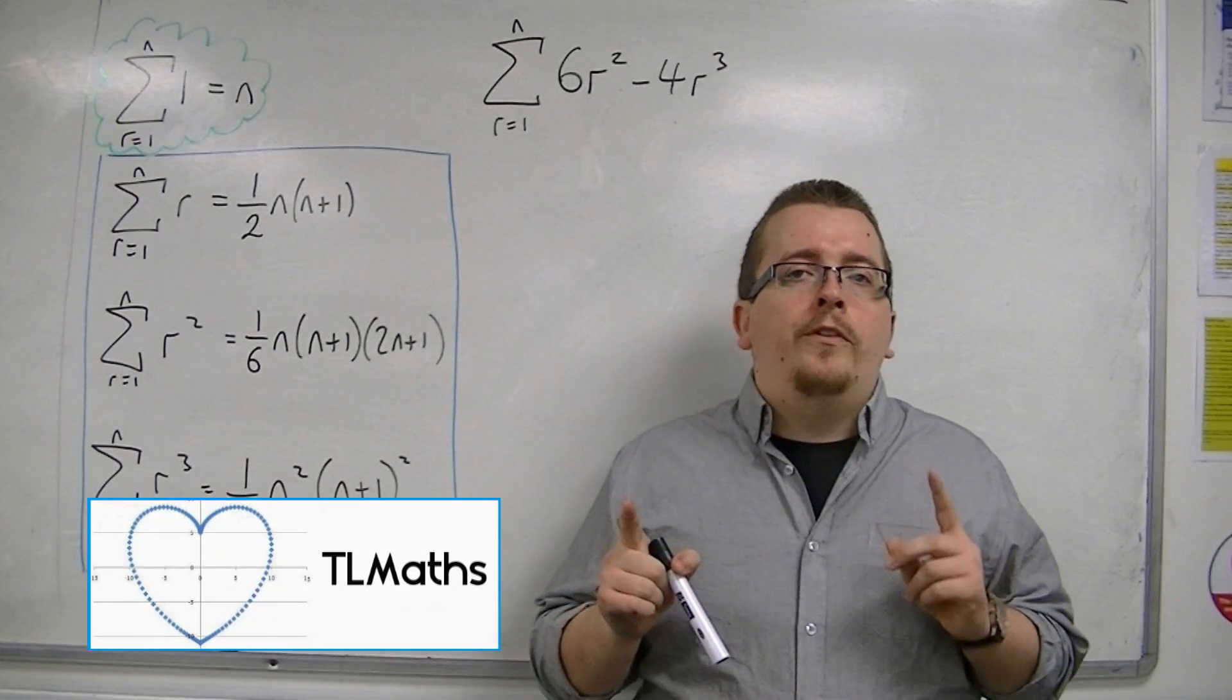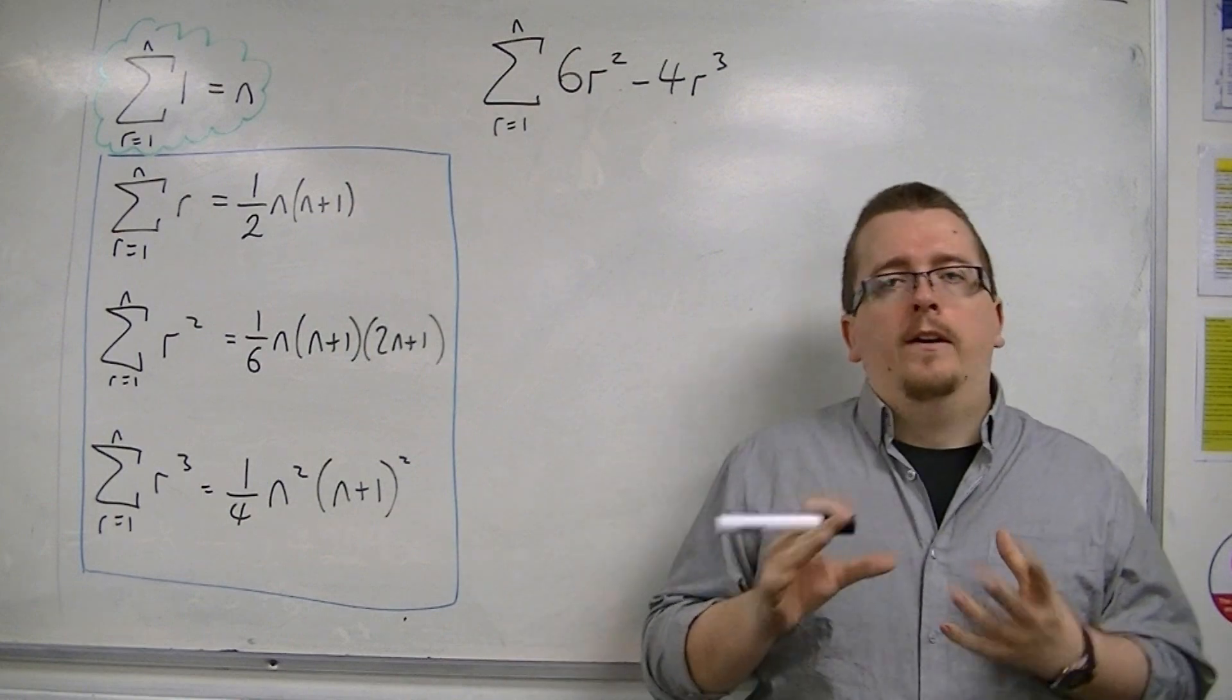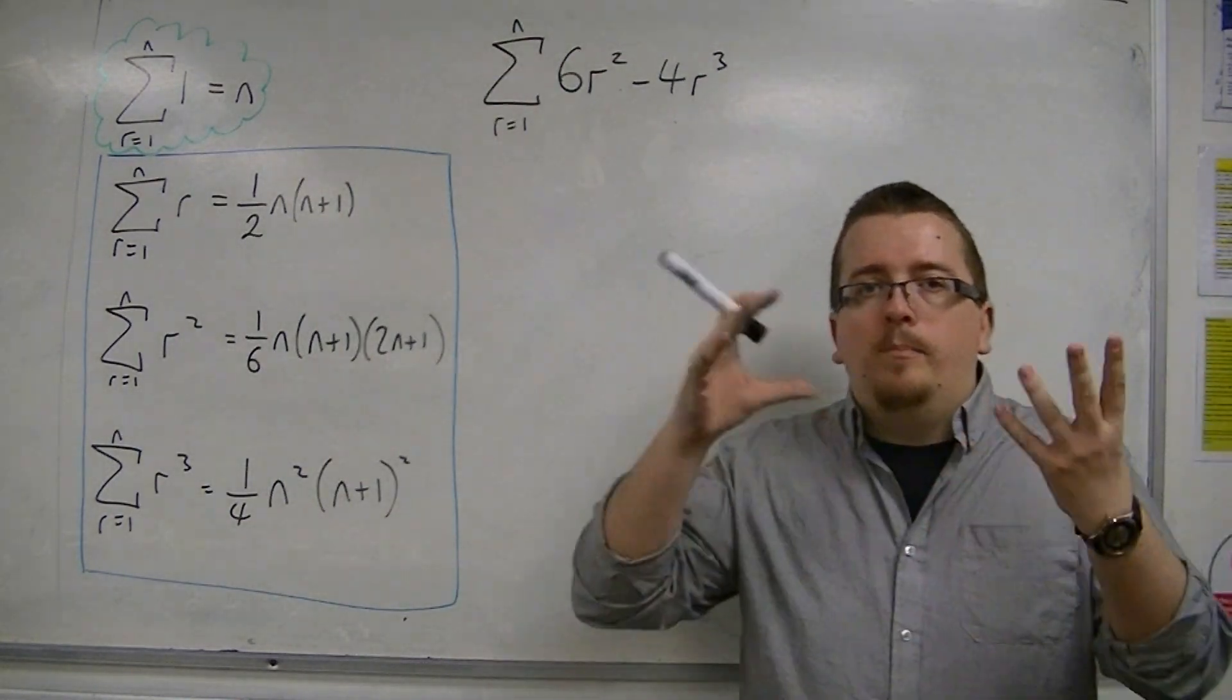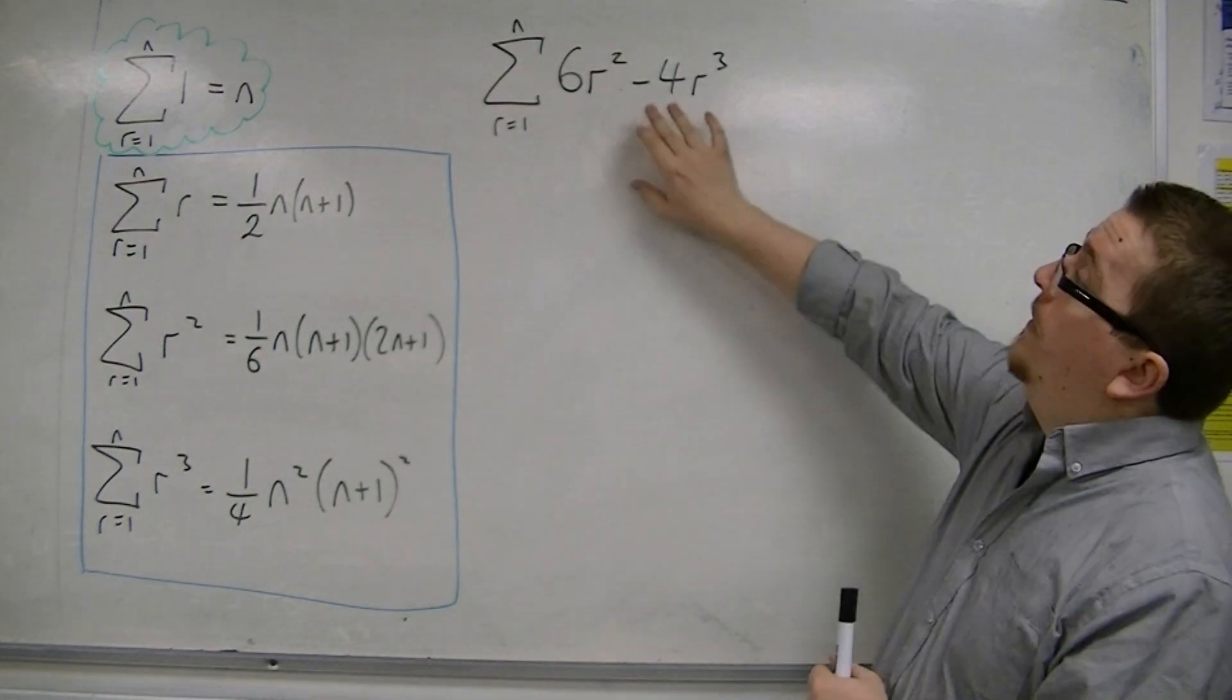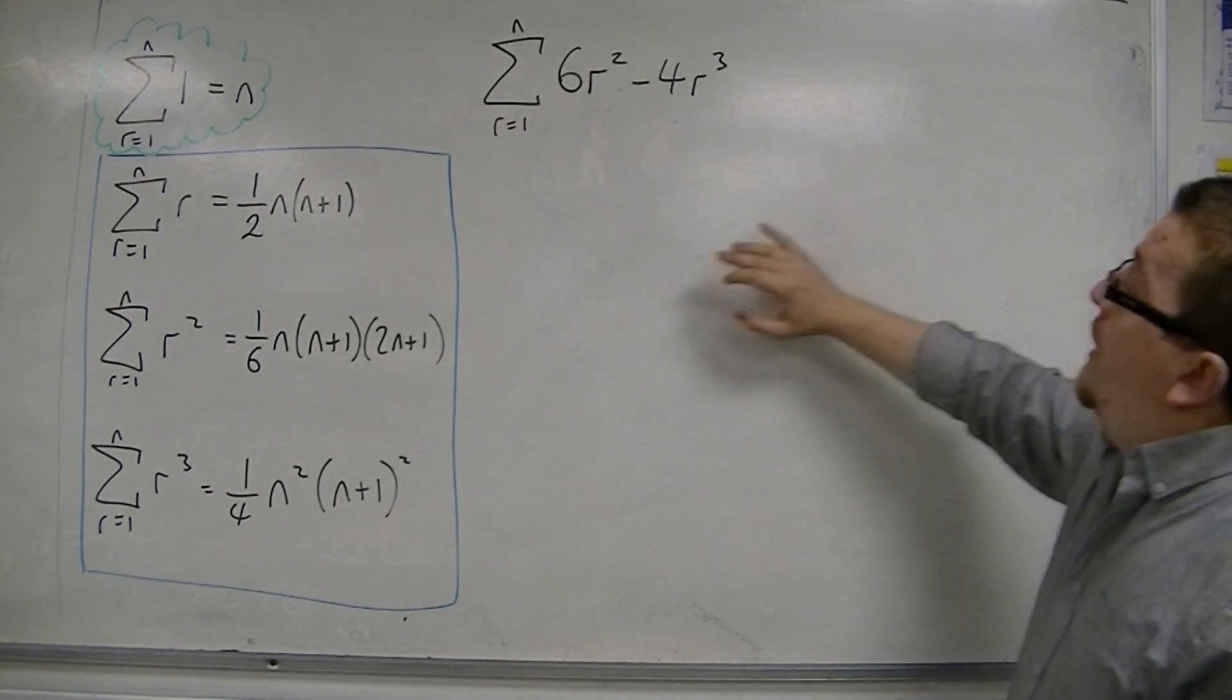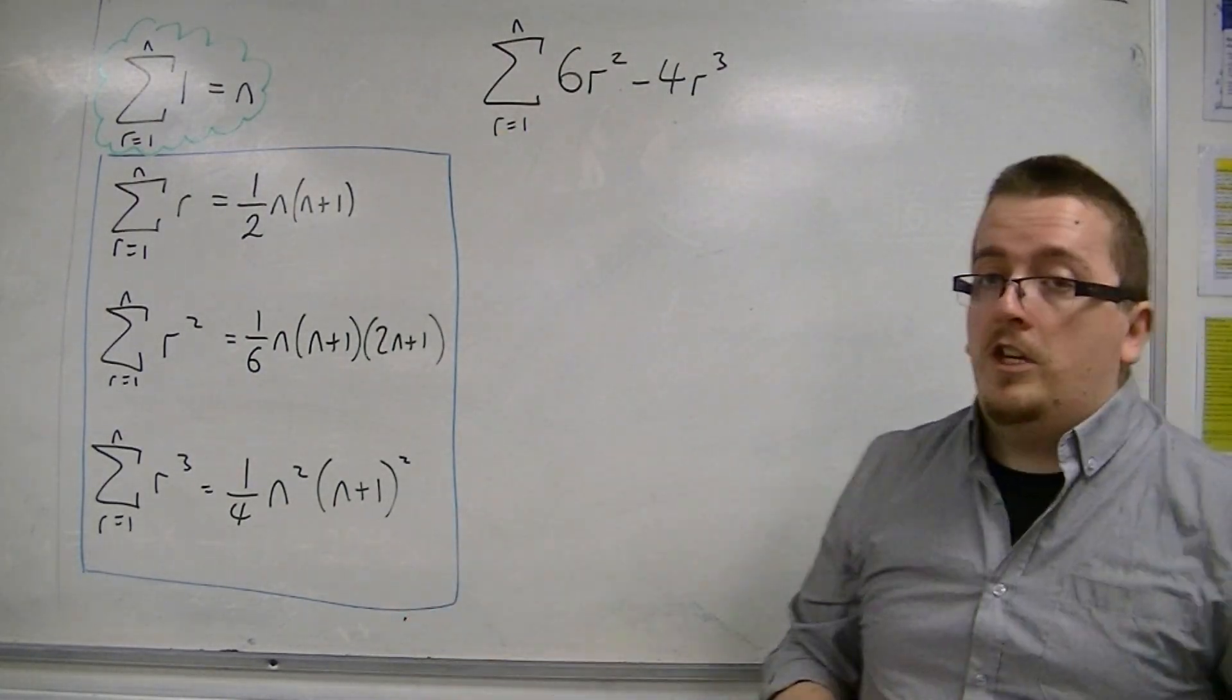So what we want to do in these videos is take a wholly algebraic approach now to the sigma notation. And what we want to be able to do is to completely factorise this series, the sum from r equals 1 to n of 6r squared minus 4r cubed.